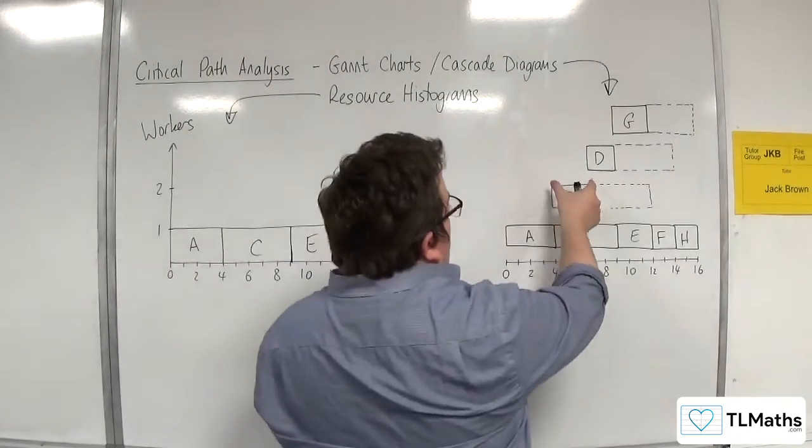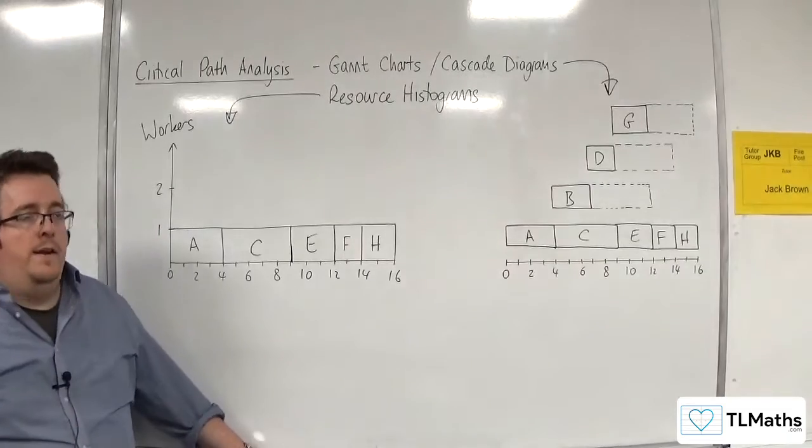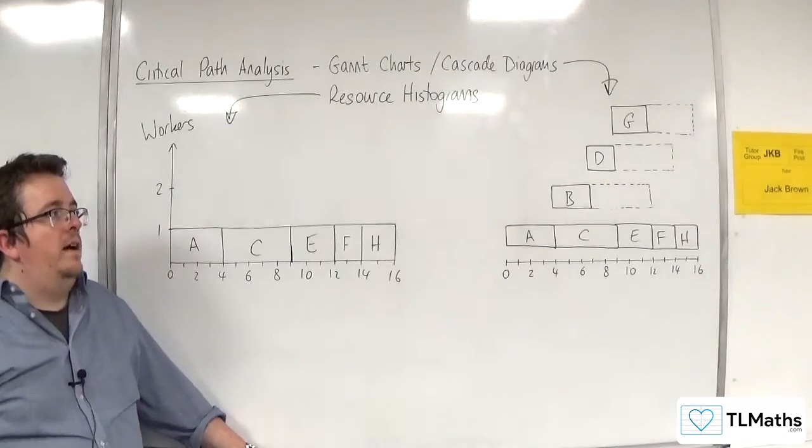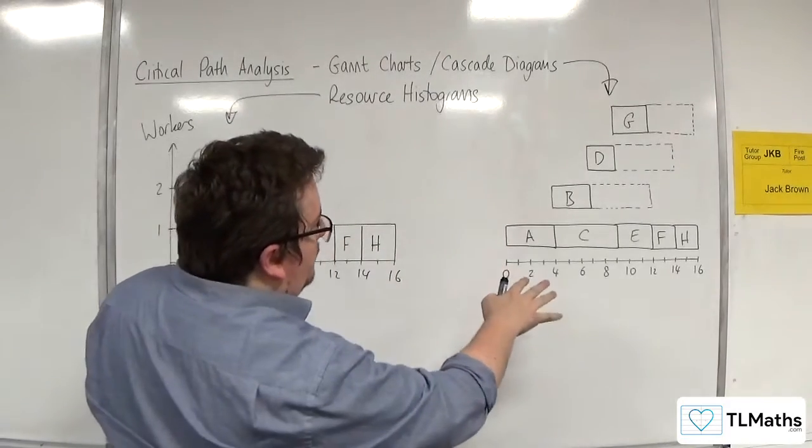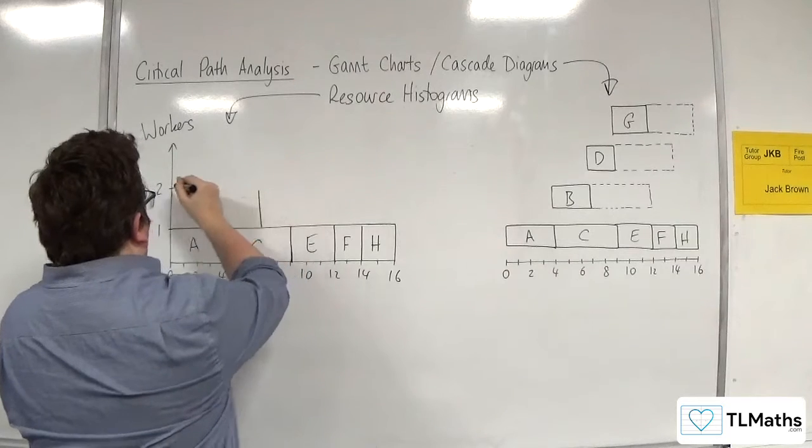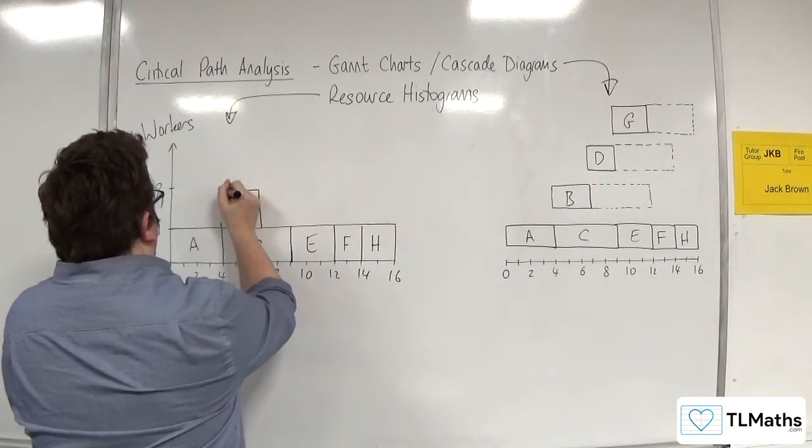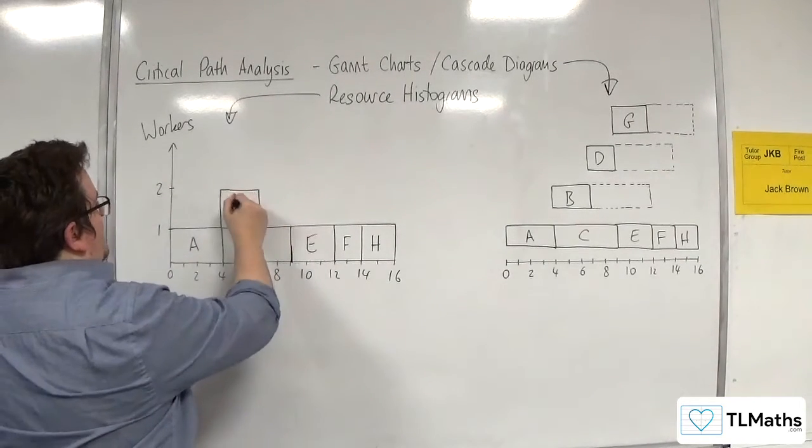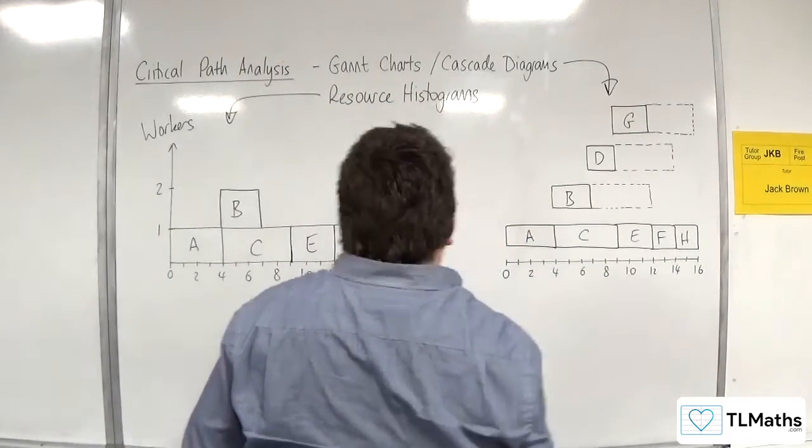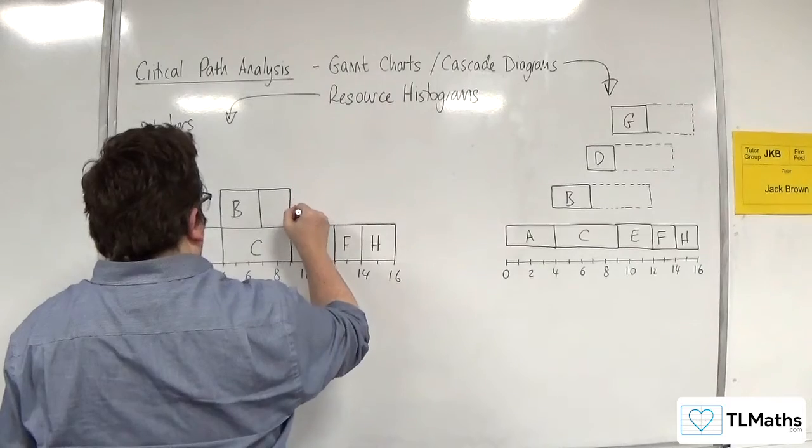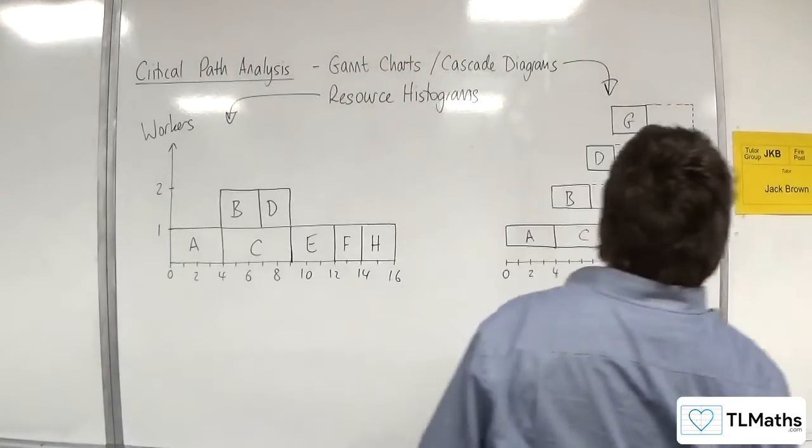Then these activities, actually, the way that they are, they can just drop immediately into place one after the other if they all take on their earliest start time. So activity B can drop down, and that's going between four and seven. And try and draw that a little bit neater. I don't know if I've achieved. So that's B, four and seven. Then D can drop immediately down next to it, and that takes us up to nine. And G can drop down right next to it, and that takes us up to 12.